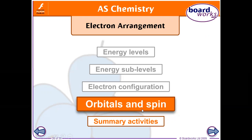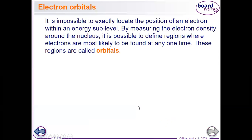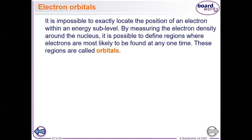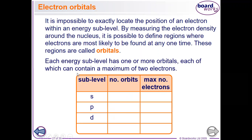Today we're going to talk about orbitals and spinning. By measuring the density of the distribution of electrons around the nucleus, science finds that electrons are highly likely to be found in some places rather than others. These places are called orbitals, which are found inside the sub-energy levels. So the principal energy level contains sub-energy levels, and within those sub-energy levels there are small sections — partitions — called orbitals, where electrons are actually found.